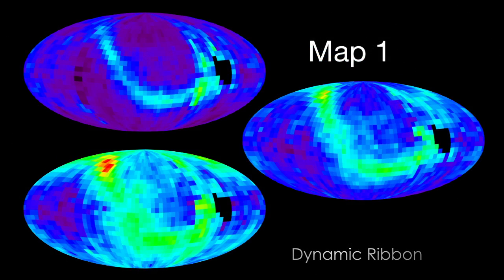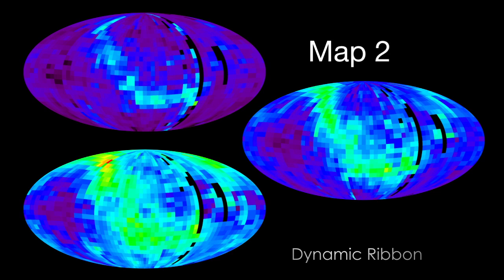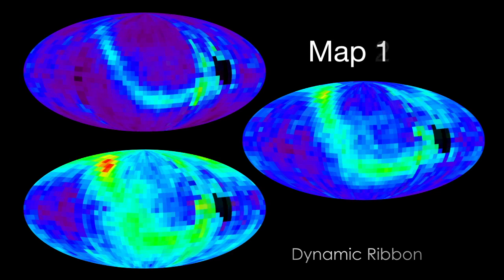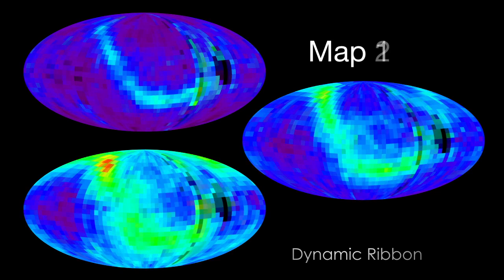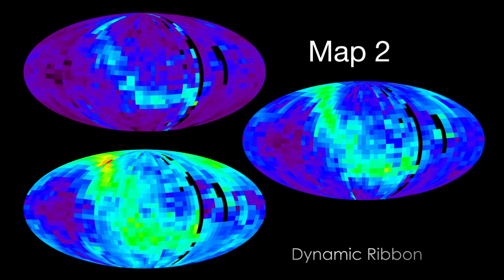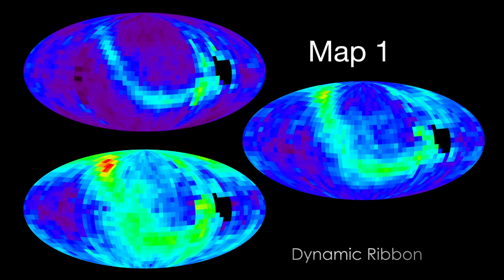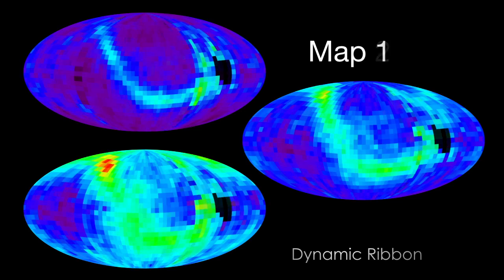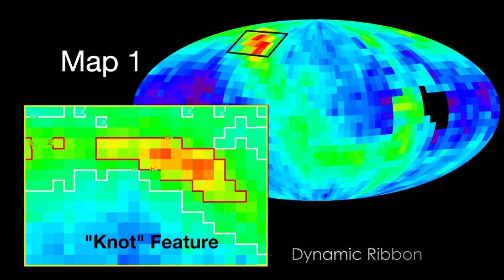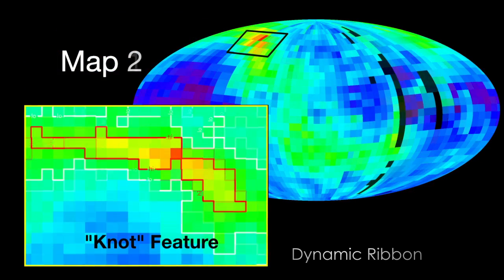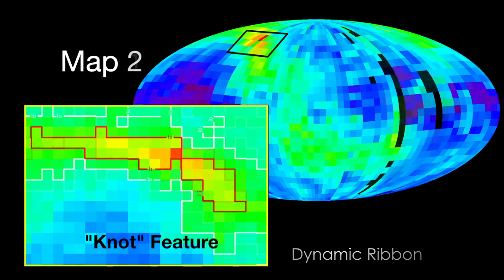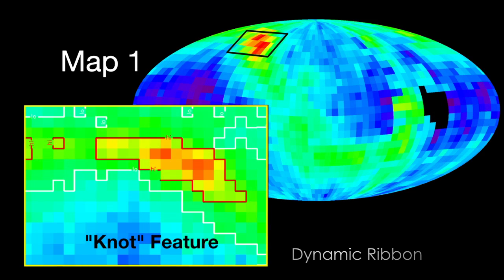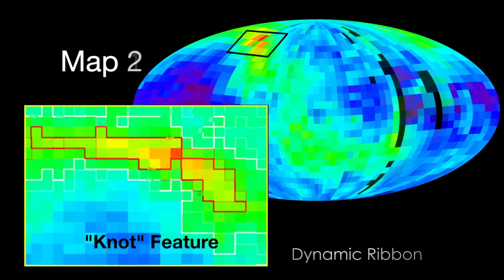New data from NASA's Interstellar Boundary Explorer reveal that conditions at the edge of our solar system may be much more dynamic than previously thought. This second set of all-sky maps show the evolution of the interstellar boundary region. The mysterious ribbon feature at the nose of the heliosphere has changed shape, and a knot-like feature has formed. This variation over time is forcing scientists to try to understand how the heliosphere can be changing so rapidly.